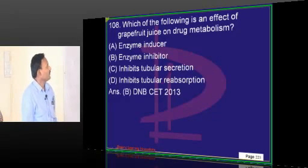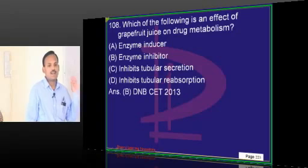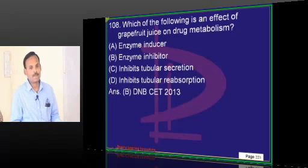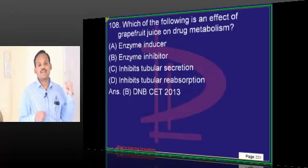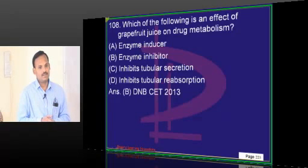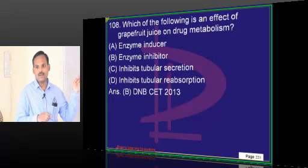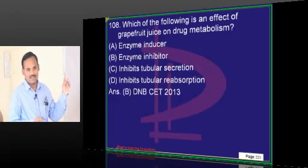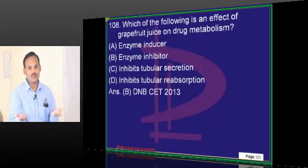Which of the following is an effect of grapefruit juice? Note: grapefruit is a combined word — it is different from the regular grapes we take. There is no space between 'grape' and 'fruit' in grapefruit. This grapefruit is a different fruit. If you Google it you will get the image — grapefruit, which is an enzyme inhibitor, is a different fruit from the grapes we take.